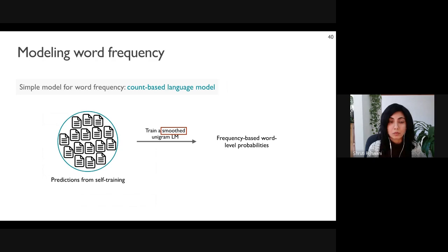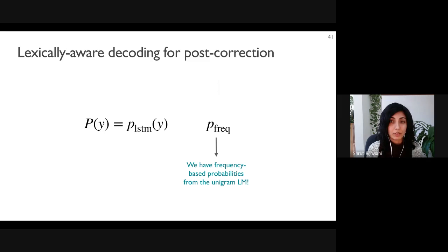Given the predictions from self-training, we train a unigram word-level model on the counts of word forms, giving us frequency-based probabilities — essentially forming a noisy weighted lexicon from the predictions. We use smoothing to reserve some probability mass for words not seen in the predictions. A significant advantage of using the count-based language model is that it's very easy to update as the predictions iteratively improve with self-training.